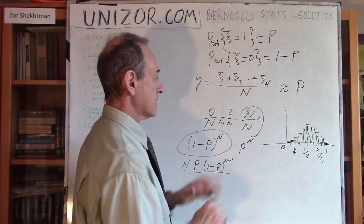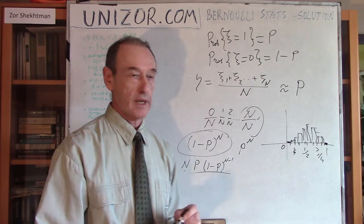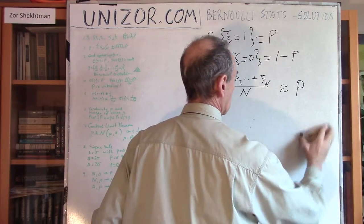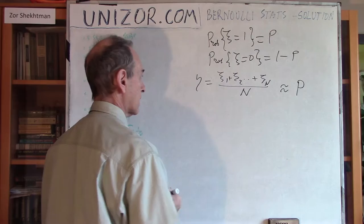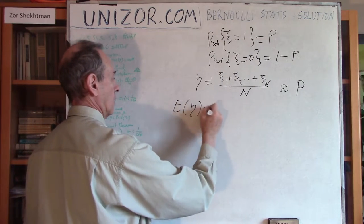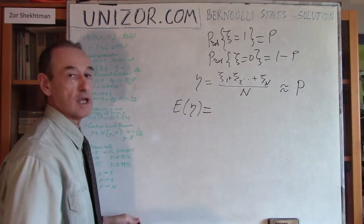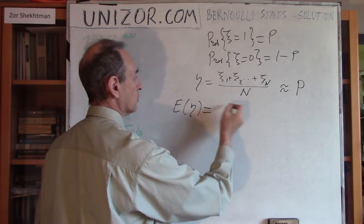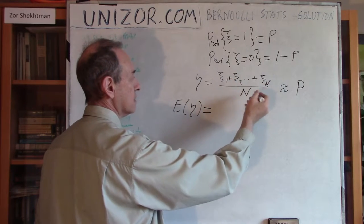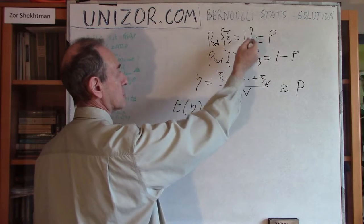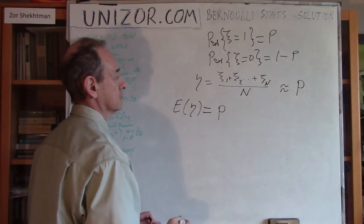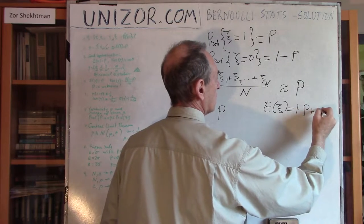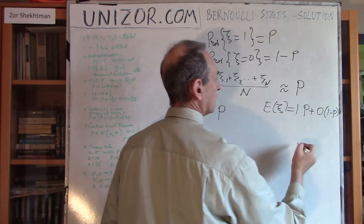Let's examine two main characteristics of η: mathematical expectation and variance. The mathematical expectation of η equals (1/N) times the sum of the expectations of each ξᵢ. The expected value of each ξᵢ is: 1 times probability p plus 0 times probability (1−p), which equals p. So the mathematical expectation of η is p.